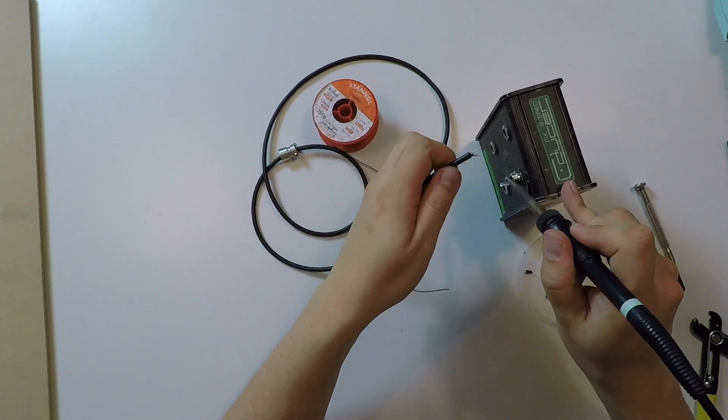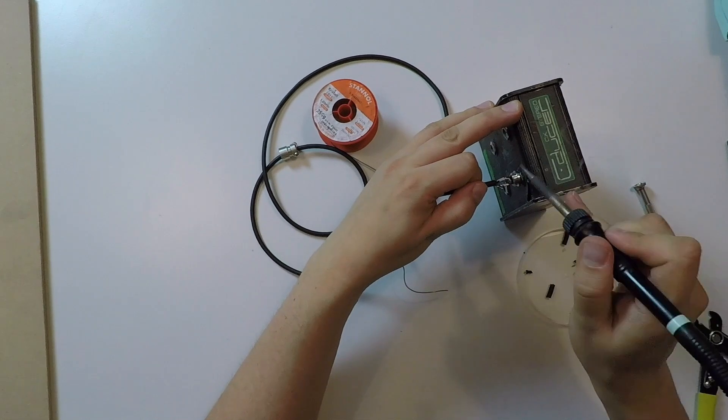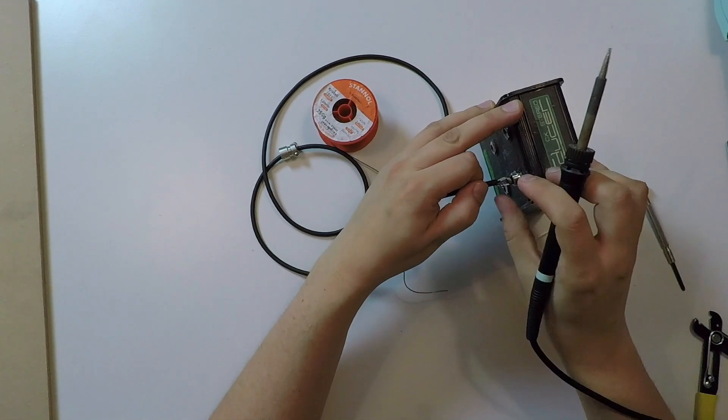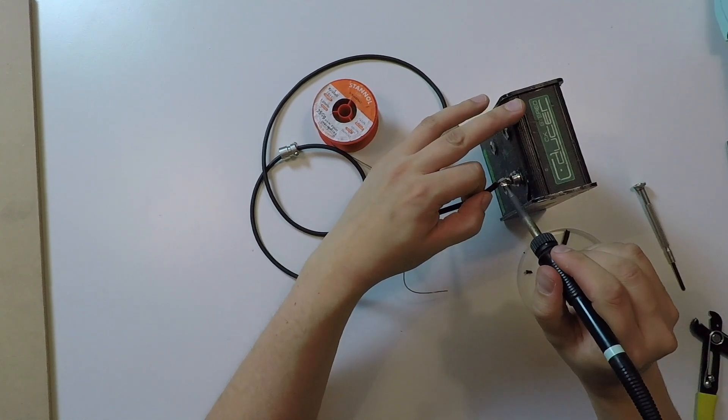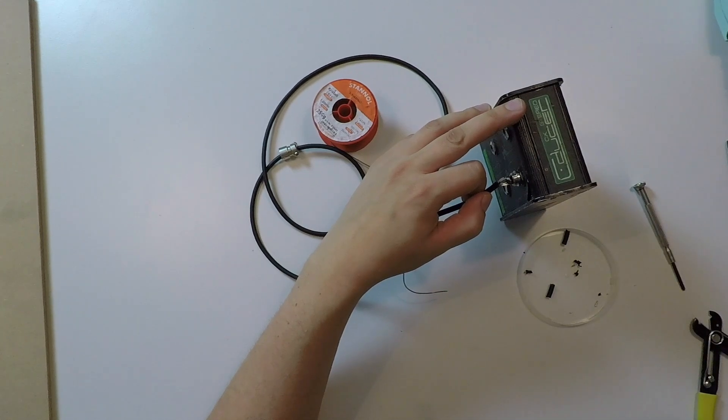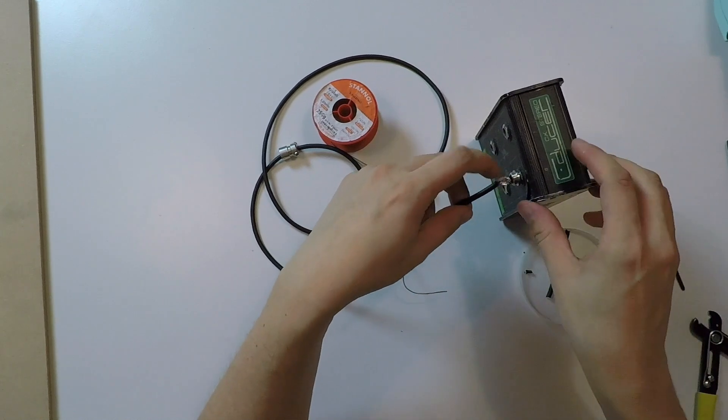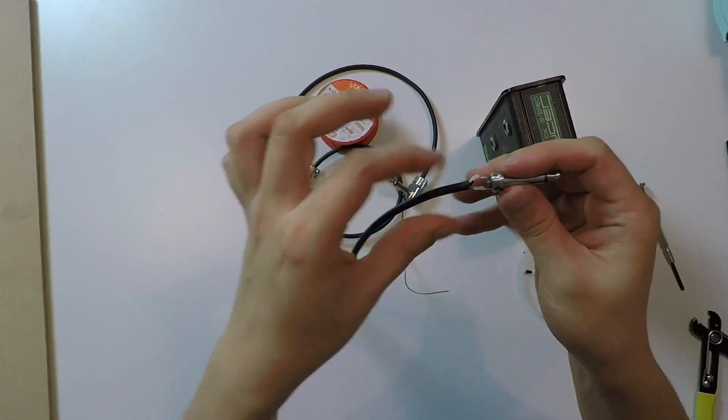And then it's just a matter of connecting the pre-tinned end of the cable. Yeah and here you go. Be careful not to melt the covering on the core conductor.